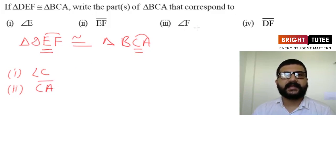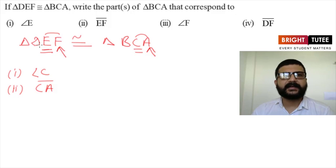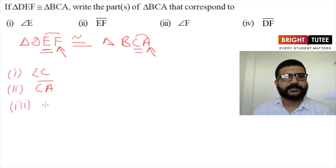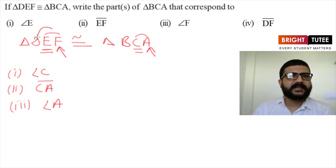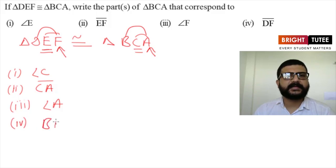The third part: angle F of triangle DEF corresponds to which angle in triangle BCA? We check the position of vertex F in the naming of the triangle — it is in the last position. Here also the last position angle is angle A, so angle F corresponds to angle A. The last part is line segment DF — it is made up of the first and last vertex, so it corresponds to BA, written as line segment BA.